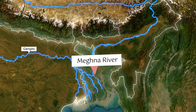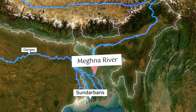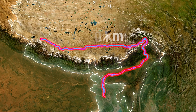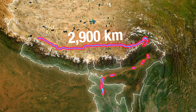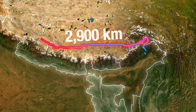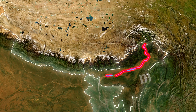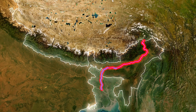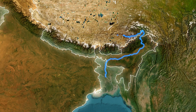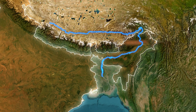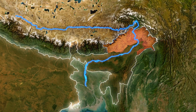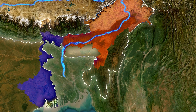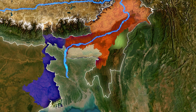In Bangladesh, the Jamuna merges with the Ganga river and becomes the Meghna river, forming one of the world's largest deltas, known as the Sundarbans. The total length of the Brahmaputra is 2,900 kilometers, of which around 916 kilometers flows through India.